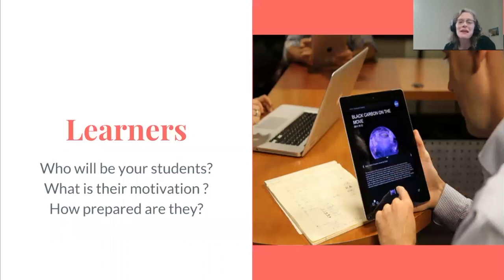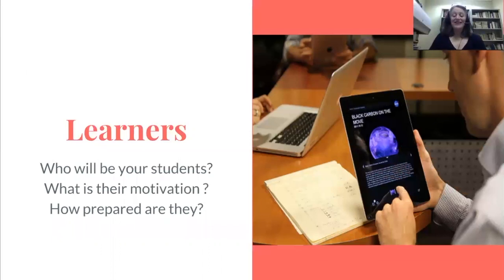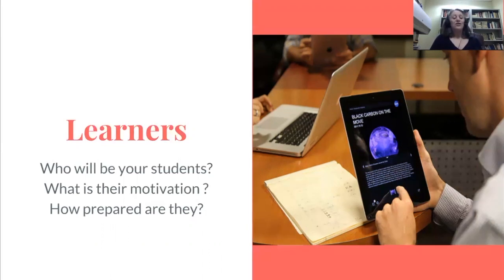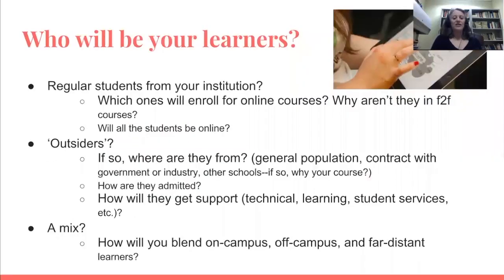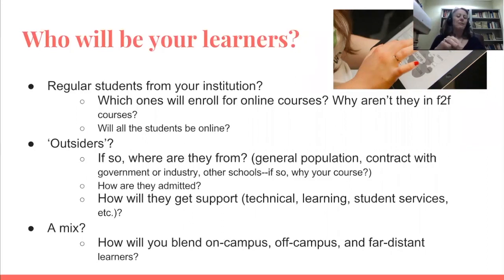Now let's talk more about learners. Learners are the whole reason we're doing this — we want people to learn foreign languages and learn them really well. We need to consider them as we're considering all other parameters. Who are these students going to be in your online course, and what is their motivation? How well prepared are they? First, are these going to be students from your institution? Which students will enroll in your online courses? Ask yourself: why aren't they going to the face-to-face courses? What do they expect out of an online course?